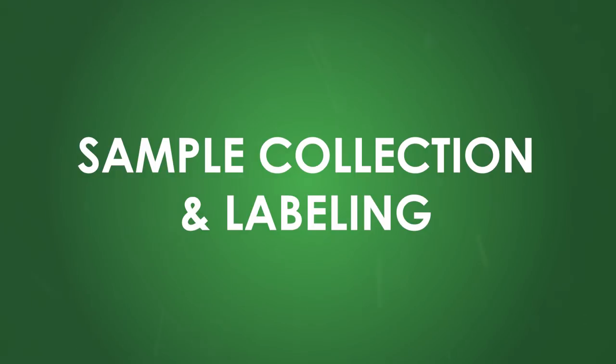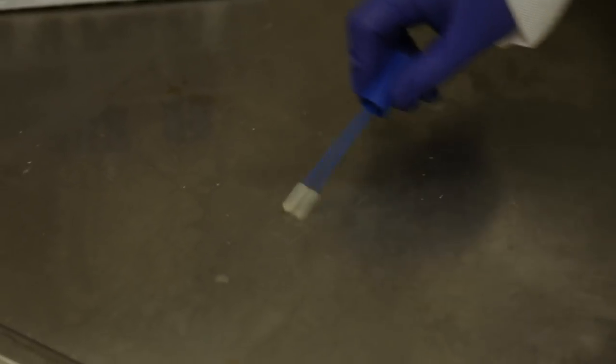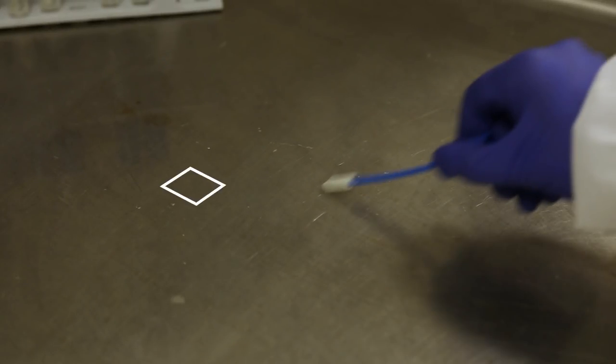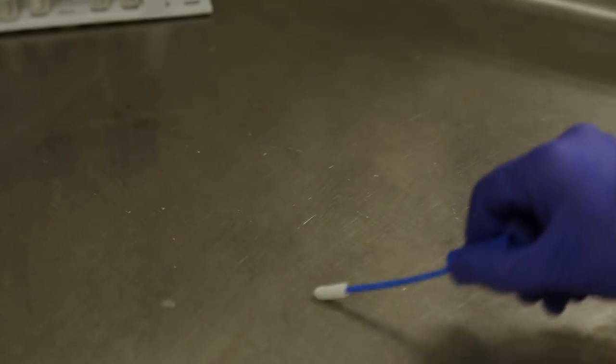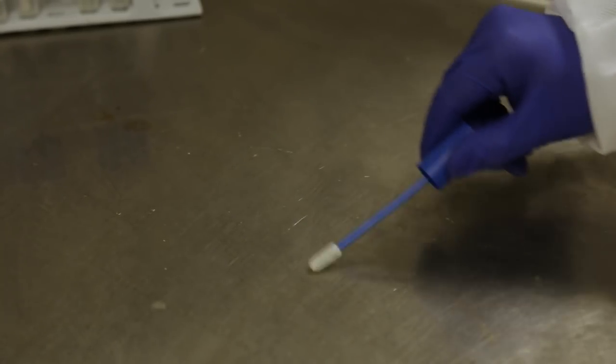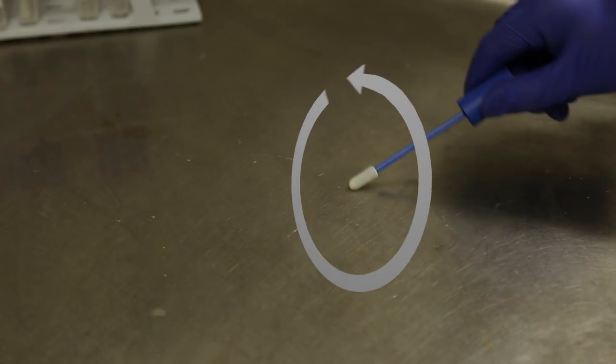Sample collection and labeling. Be sure you are using good environmental sampling techniques as demonstrated. When using a sampling swab, you should be able to cover an area that is between 1 inch by 1 inch and 4 inches by 4 inches. Apply as much pressure as you can, going horizontally and then vertically, then once on a diagonal. While doing this, roll the sampling swab in your fingers.